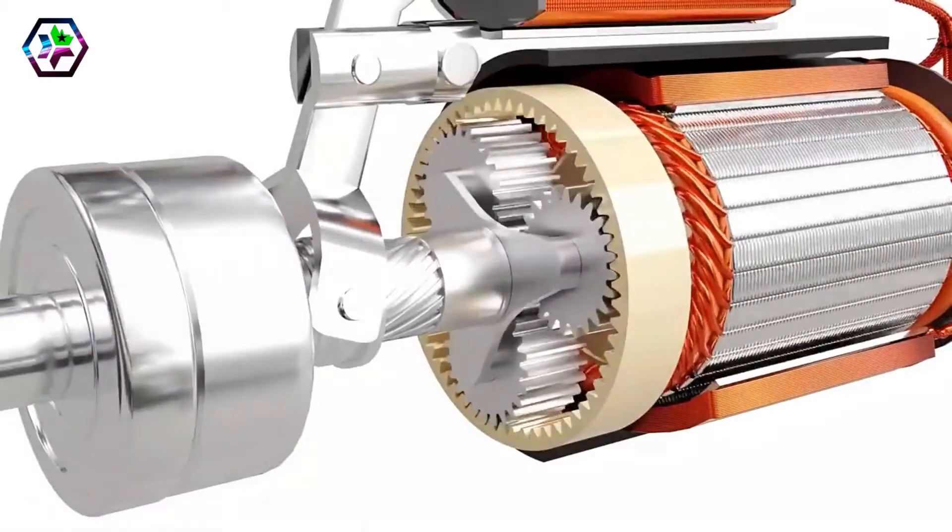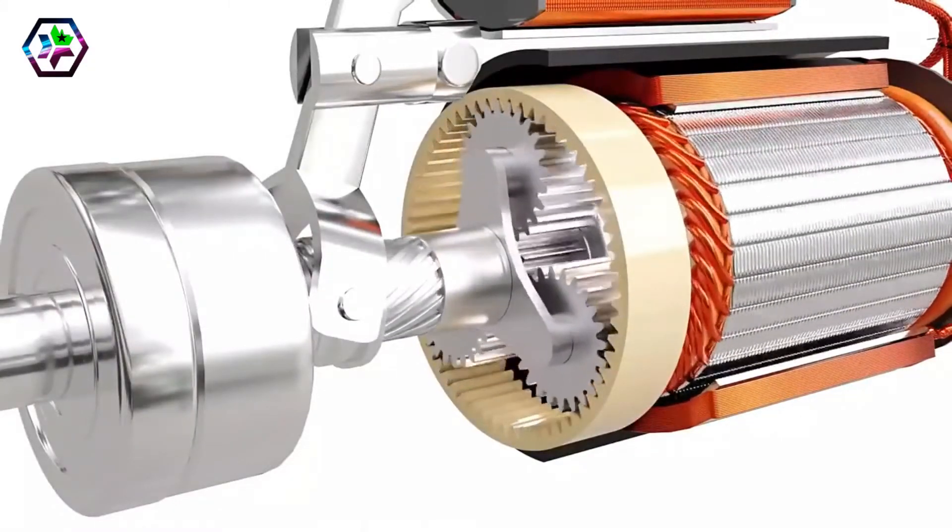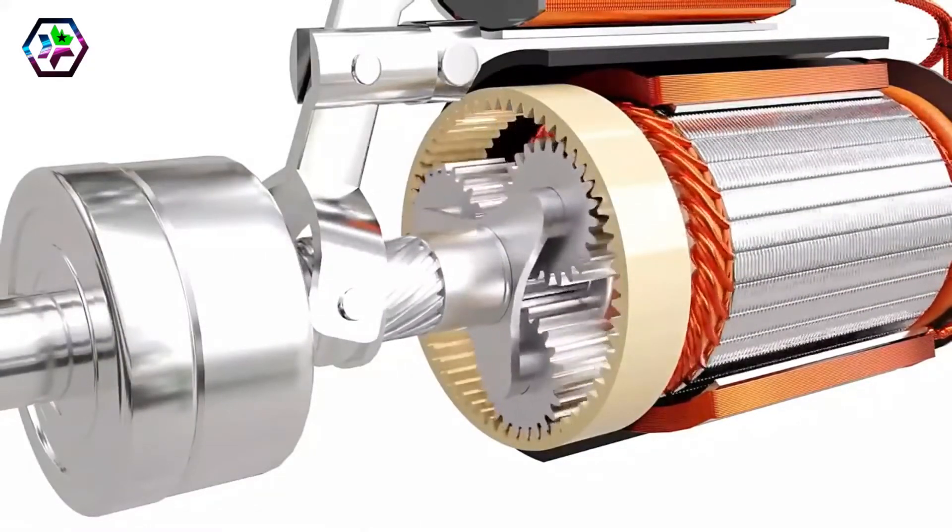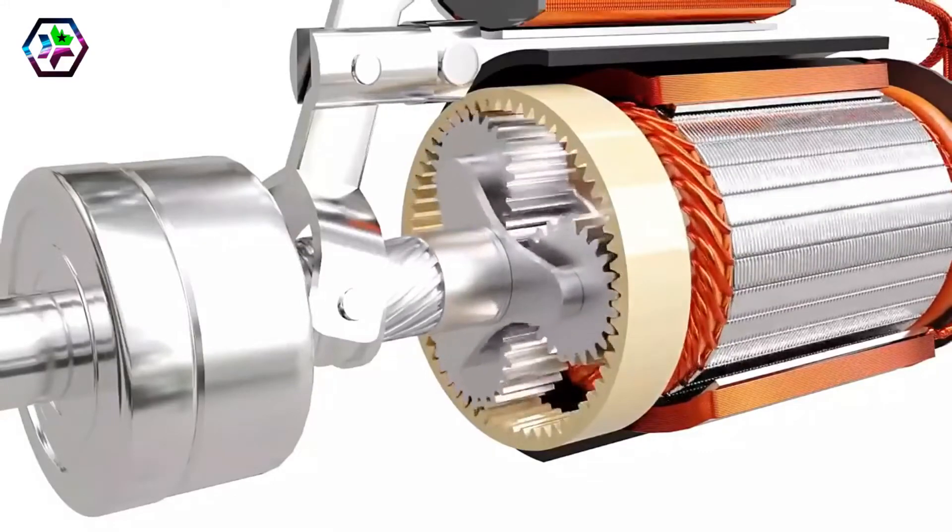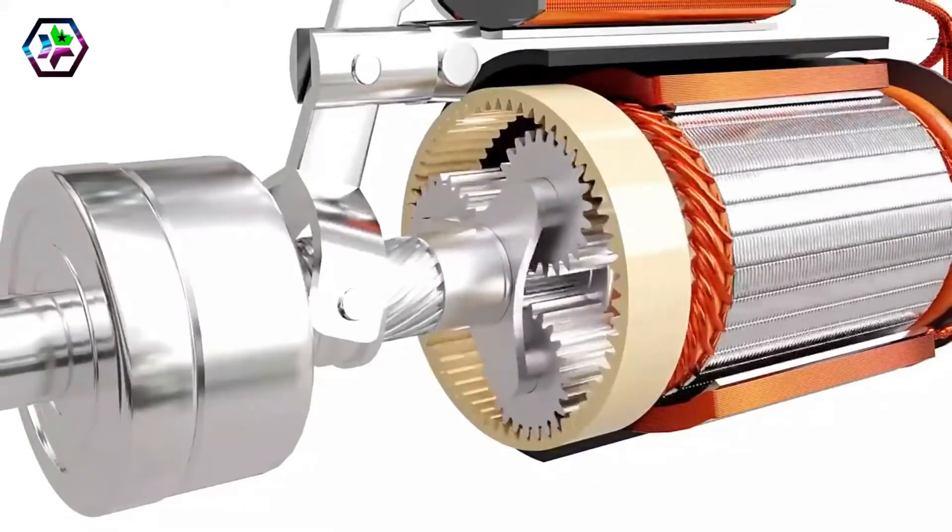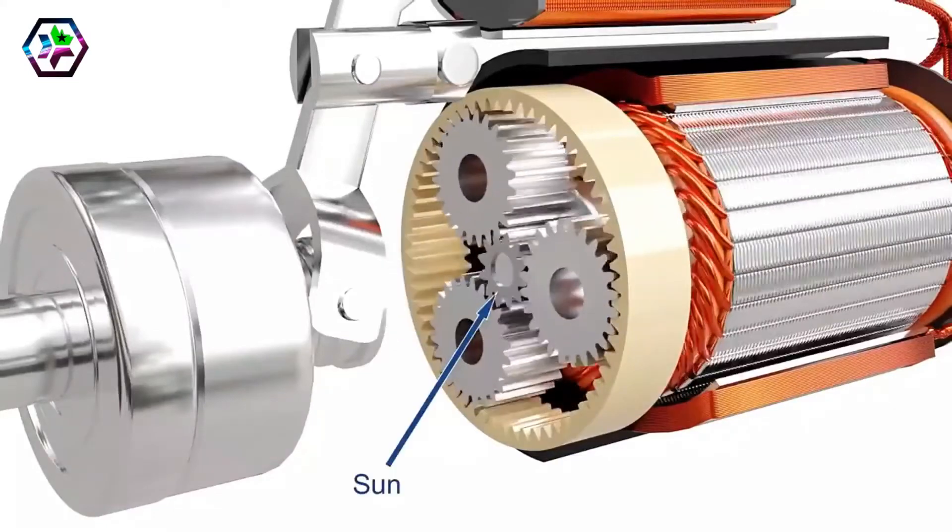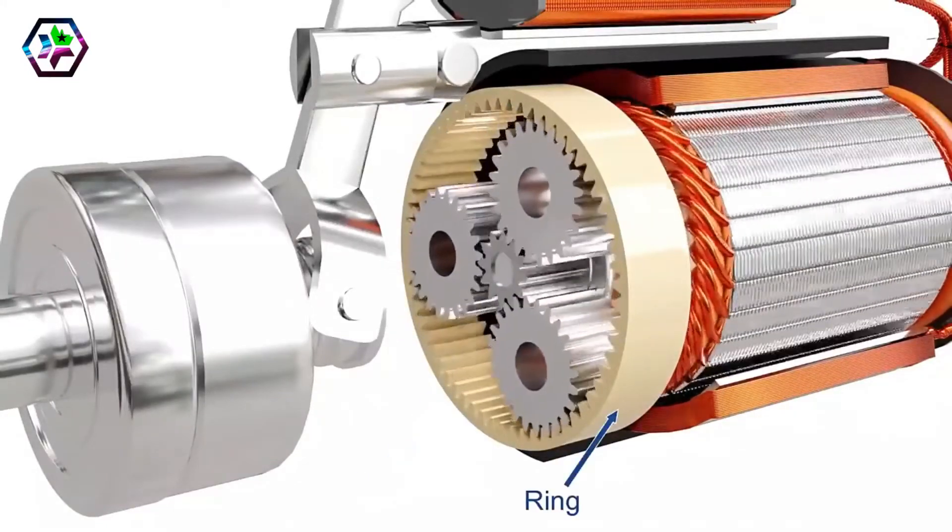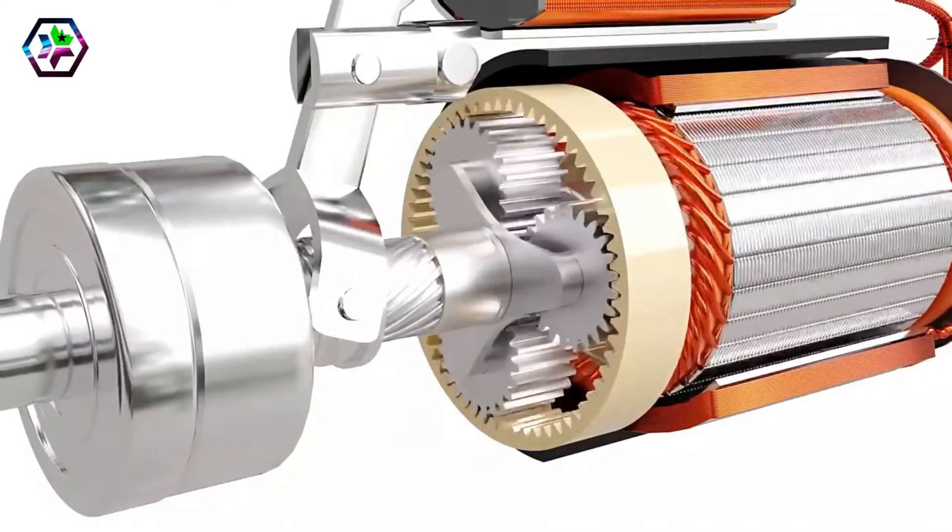So, a planetary gear set is introduced to increase the torque further. Planetary gears are incredibly useful for large gear reductions with less weight and limited space. It consists of a sun gear, a ring gear, a carrier, and a set of planet gears.